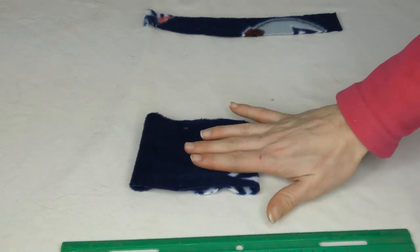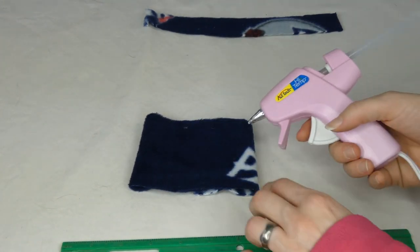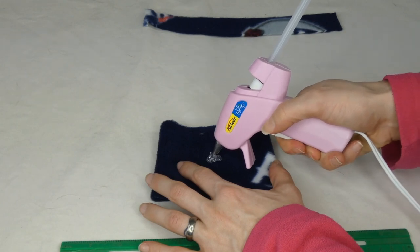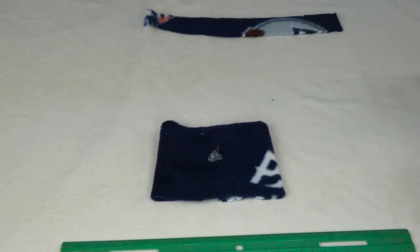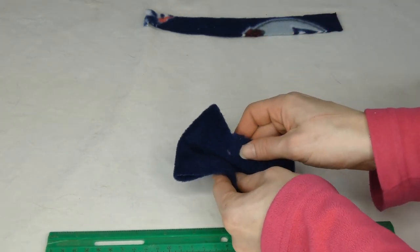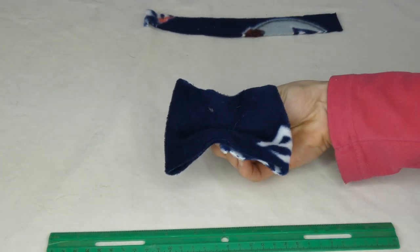Then I'm going to flip it over, and with the good side facing up, I'm going to put a good size dot of hot glue right in the center. And now I'm going to fold it in in the middle, and just pinch it until it dries.